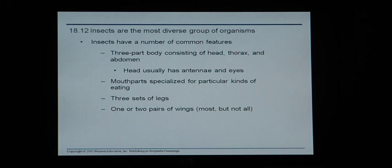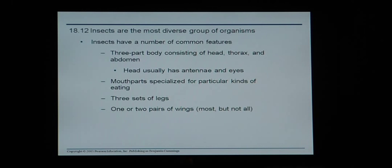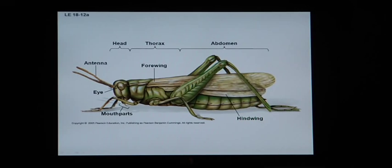Insects are the most diverse group of organisms and have a number of common features: a three-part body consisting of a head, thorax, and abdomen. The head usually has antennae, eyes, and mouth parts used for particular kinds of eating. They have three sets of legs and one or two pairs of wings, though not all insects have wings. Here is a typical insect — a head with eyes, mouth parts, and antennae; the thorax in the middle section; and then the abdomen.